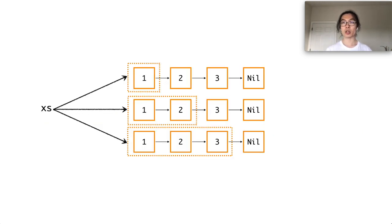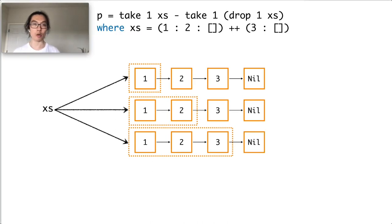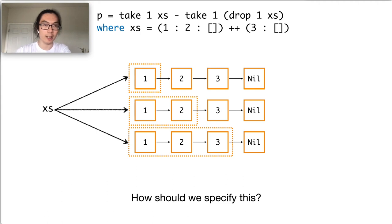The clairvoyant monad replaces laziness with non-determinism, so we don't have to reason about laziness. But now, we need to reason about non-determinism. Let's use the function p as our running example again. In the case that we have at least some demand for xs, the possible results of xs are shown as follows. How should we specify all the possible non-deterministic results of xs?